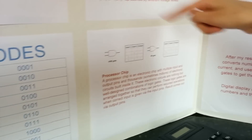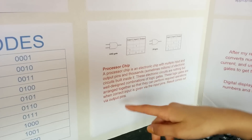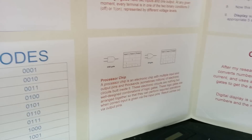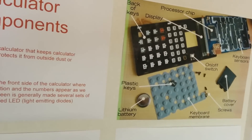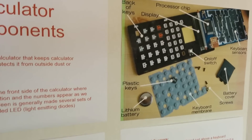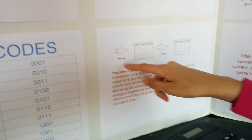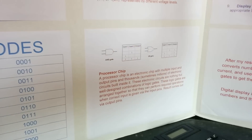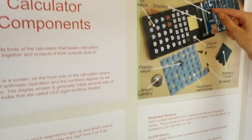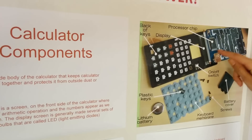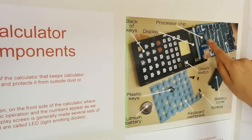And let's learn about the processor chip and logic gates. The processor chip is a small chip in the calculator that does all the calculations. But how does it do it? Here are two examples of logic gates. You can see the inputs and outputs of the logic gates inside the processor chip.